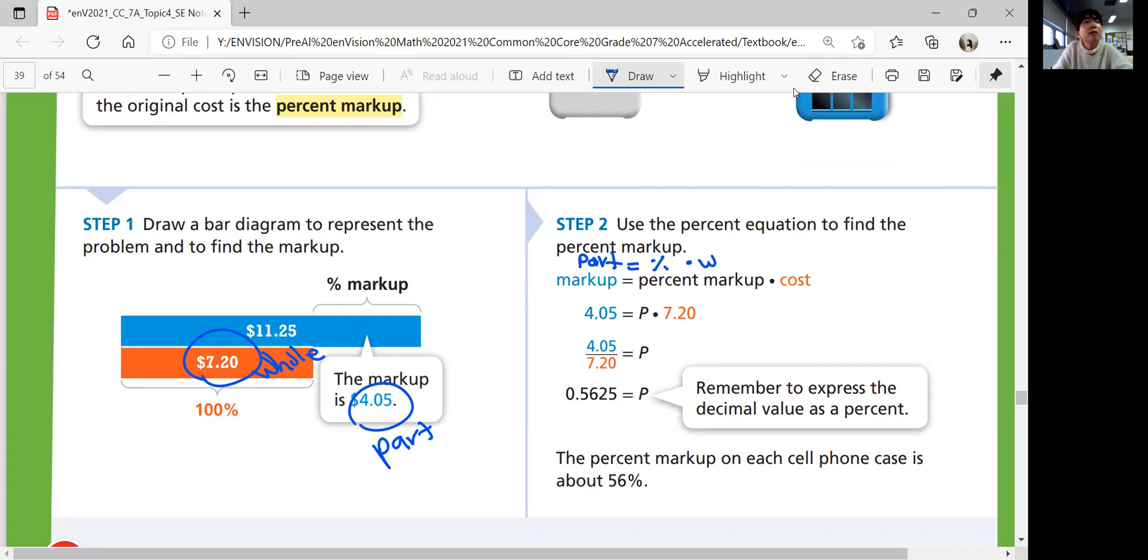The markup is the part, $4.05, equals percent times the cost, the original cost $7.20. Divide $4.05 by $7.20 to get the percentage, you get 0.5625. Remember to express the decimal value as a percent, which is multiply by 100, you get 56.25%.